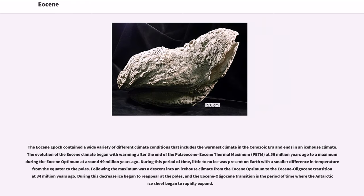The Eocene epoch contained a wide variety of different climate conditions that includes the warmest climate in the Cenozoic era and ends in an ice house climate. The evolution of the Eocene climate began with warming after the end of the Paleocene-Eocene Thermal Maximum (PETM) at 56 million years ago to a maximum during the Eocene Optimum at around 49 million years ago.